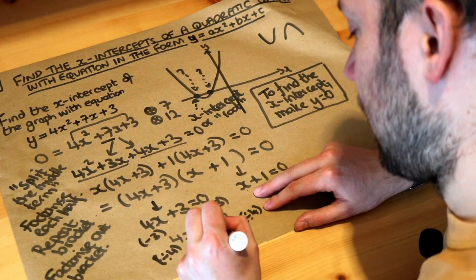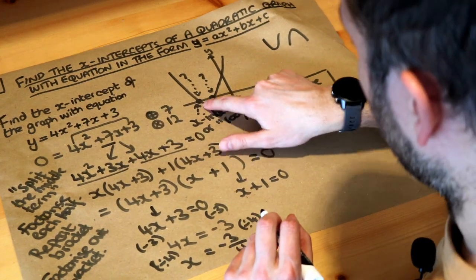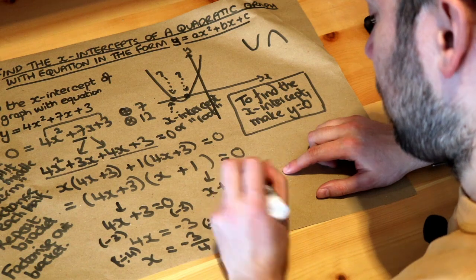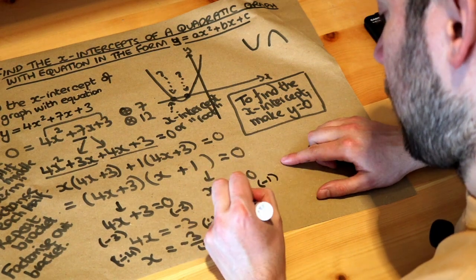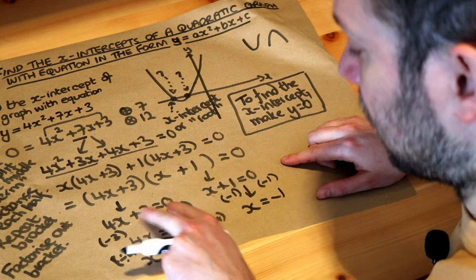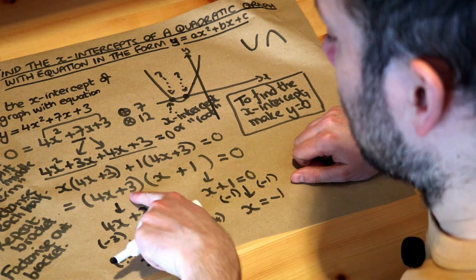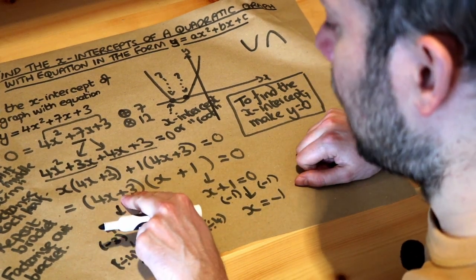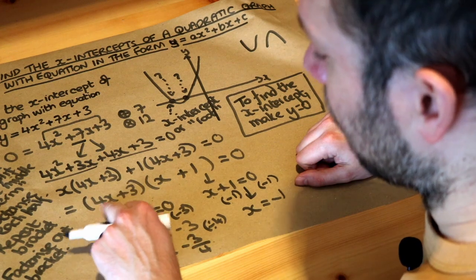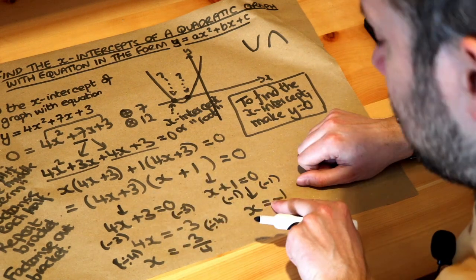You get x is negative 3 over 4, so that's one of the x-intercepts here. We don't know which one yet. And then if we solve this, we'll subtract 1 from both sides of the equation, we get x is minus 1. And you might be able to do this step in your head by the way, and that's absolutely fine if you can. The quick way of doing it by the way is you negate this number without the x, so the plus 3 becomes negative 3, and then divide by the number in front of the x, so negative 3 over 4 which is what we've got, and negative 1 over 1 which is what we've got.